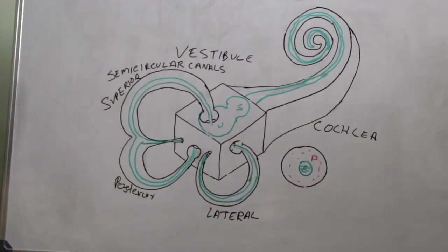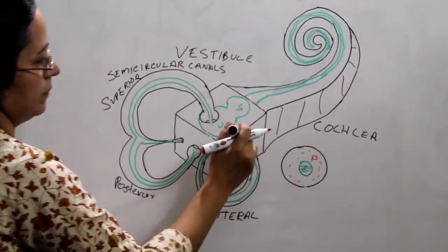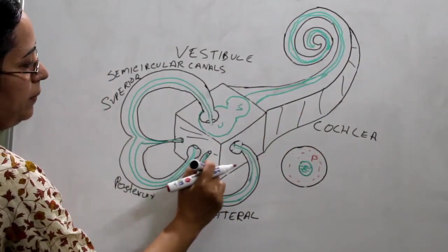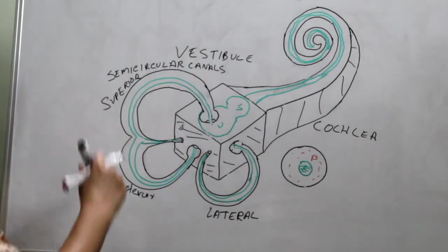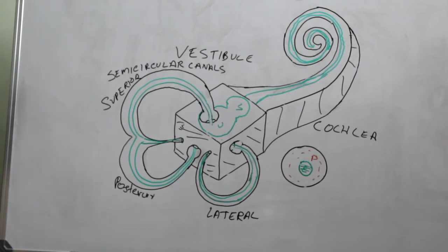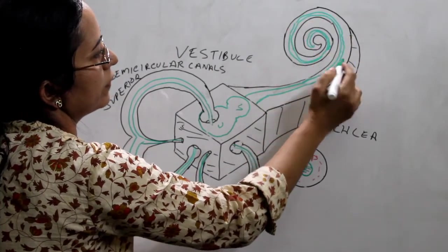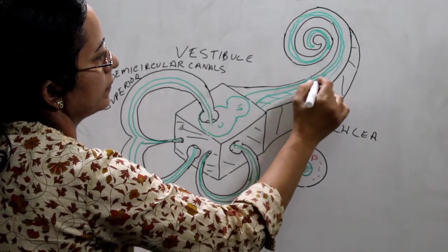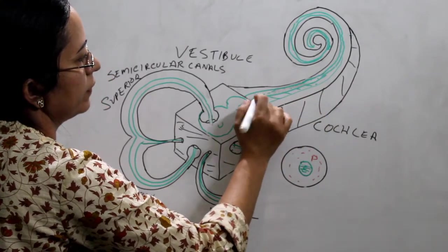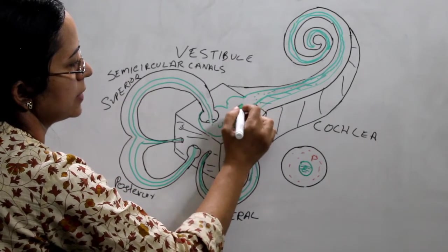So this is the bony labyrinth. Inside the membranous labyrinth — including the semicircular duct — is filled with endolymph. This endolymph is continuous with that of the saccule. All the membranous labyrinth — cochlear duct, saccule, utricle, semicircular ducts — are all interconnected and filled with endolymph.